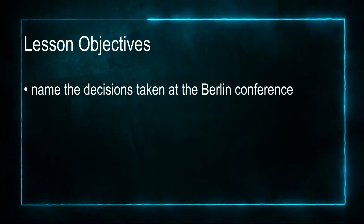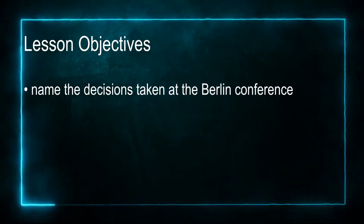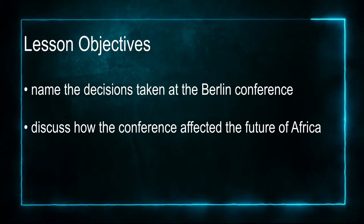Good day viewers, welcome to our third program for Grade 8 free lesson. My name is Nathaniel Newarka. Today we are going to learn about a group of European men who decided to meet to discuss ways to divide Africa without fighting over it — namely the Berlin Conference. At the end of this lesson you should be able to name the decisions taken at the Berlin Conference and discuss how the conference affected the future of Africa.